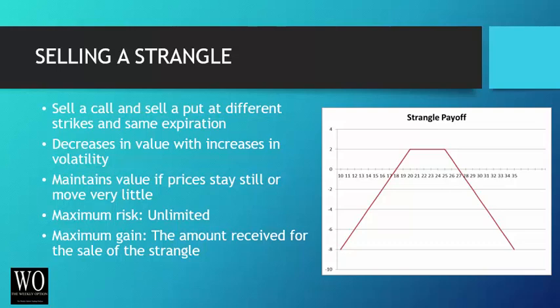Selling a strangle is when you sell a call and sell a put at different strikes on the same expiration. It decreases in value when volatility increases — so when stocks start to move, you will lose money on the short strangle position. It maintains its value if prices stay still or move very little. Just like a short straddle, your maximum risk is unlimited because of the call option you sold, and your maximum gain is the amount you received when you sold the two options.